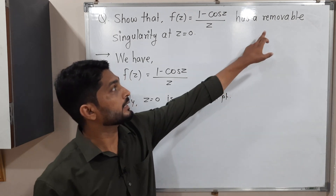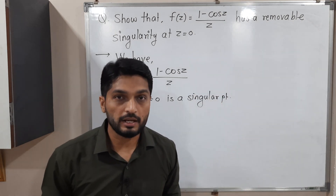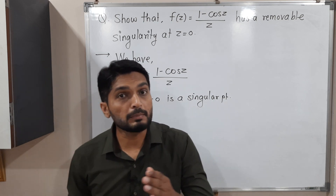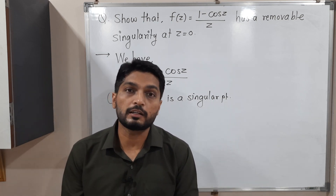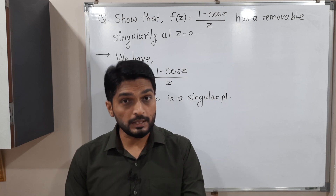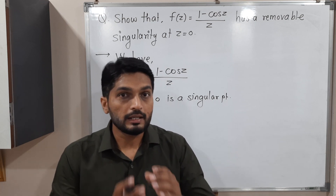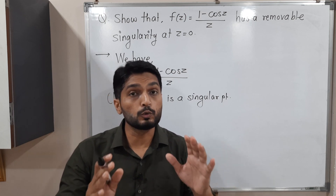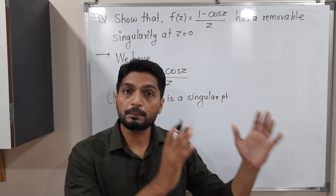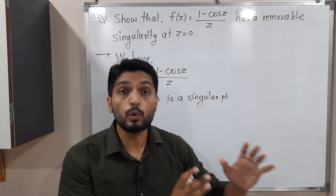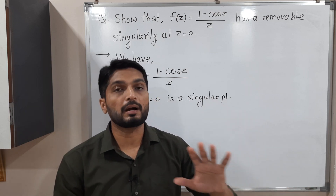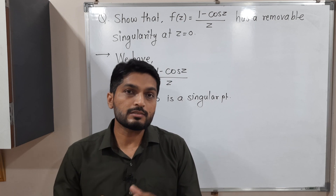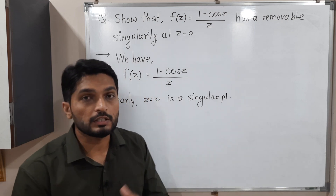Our task is to prove it is a removable singularity. Removable singularity means that singularity can be removed. The mathematical definition is: if you express the given function in Laurent series form, and there is no term in the principal part, then we can say it is a removable singularity. So let us try to express the given function in Laurent series form.